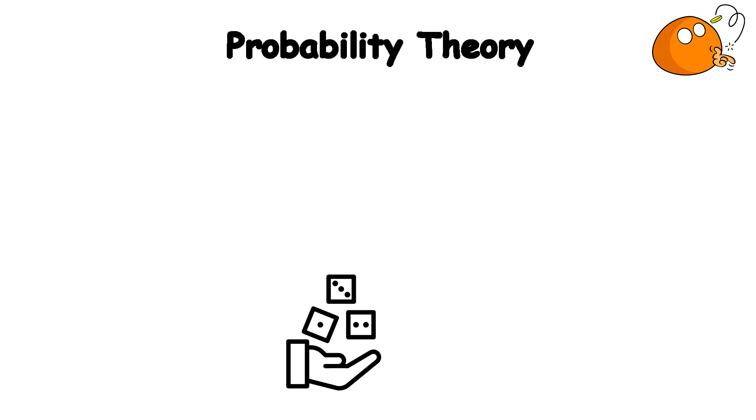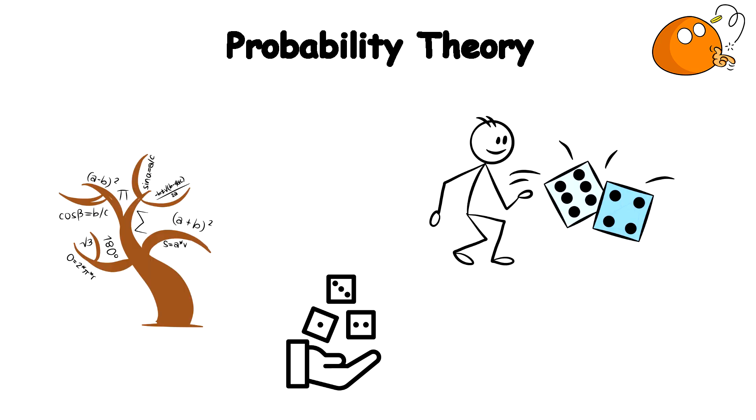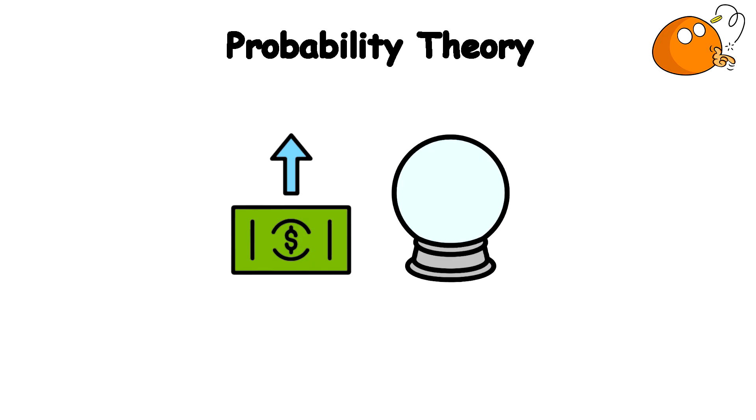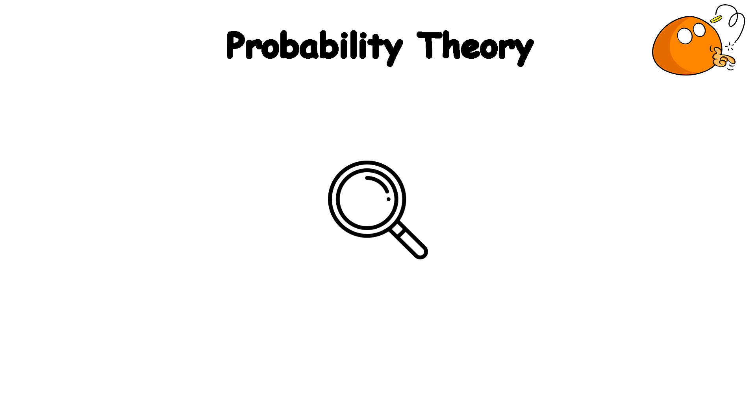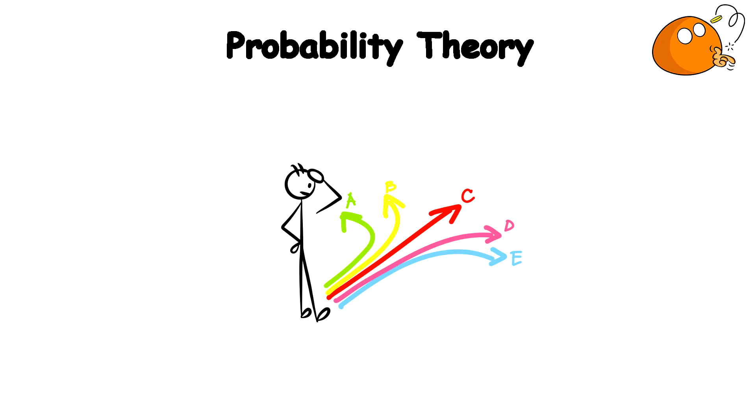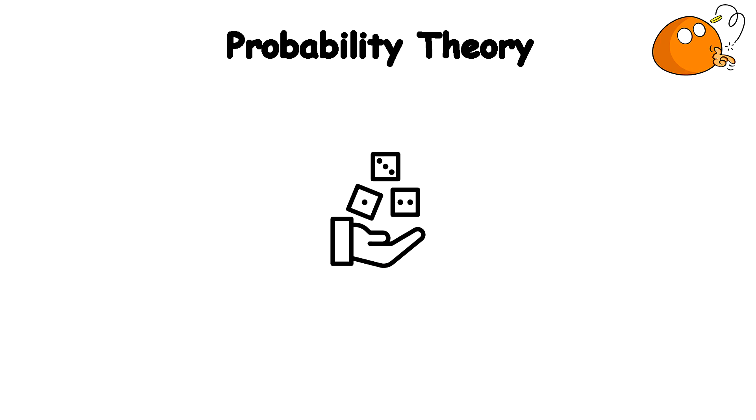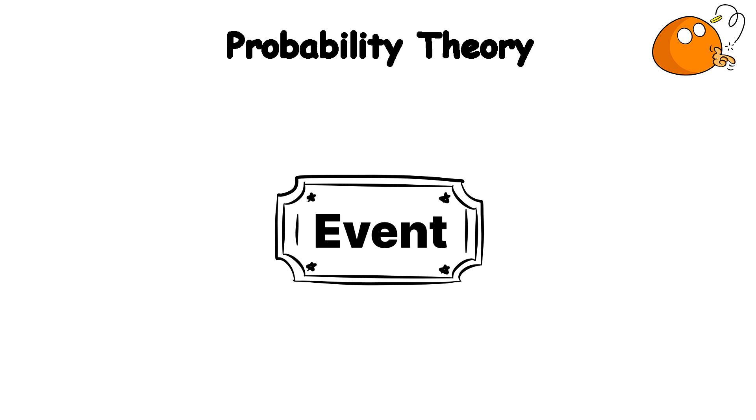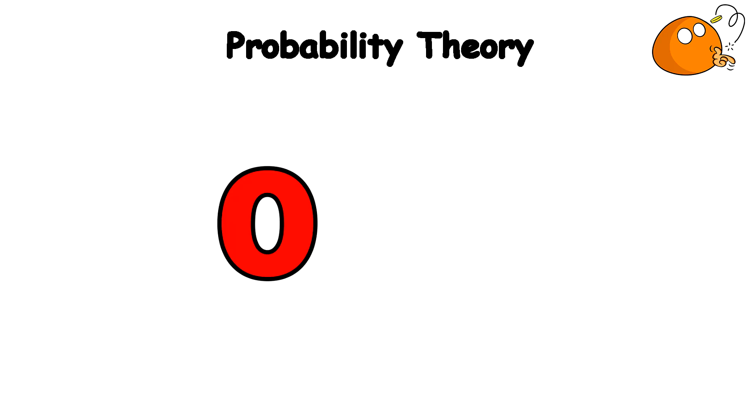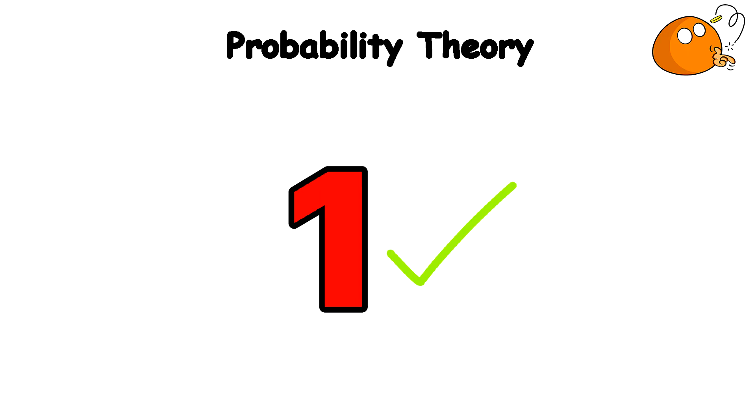Probability theory. Probability theory is the branch of mathematics that studies the likelihood of random events occurring. Probability theory helps us understand how likely each outcome is and how to predict the chances of different events happening. In simpler terms, it's like a way of measuring how often something is likely to happen based on all the possible options. Let's break it down even further, shall we? Within probability theory, there exists events. These are the things that can happen, like flipping a coin and getting heads or tails. Outcomes. These are all the possible results of an event, like heads or tails in the coin toss. And finally, probability. This is a number between 0 and 1 that tells you how likely an event is to happen. 0 means it's impossible, and 1 means it's certain.